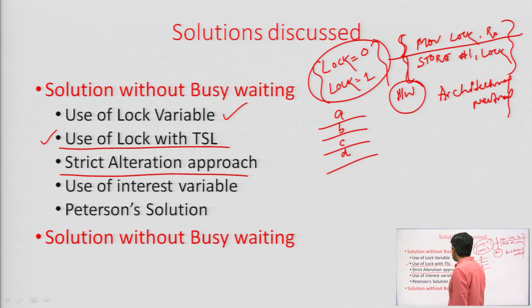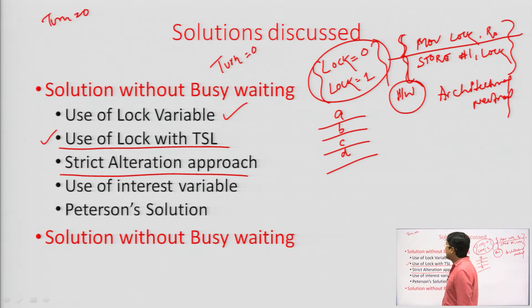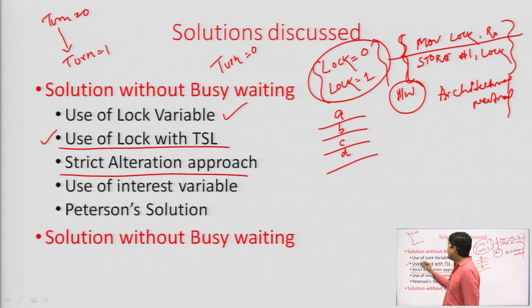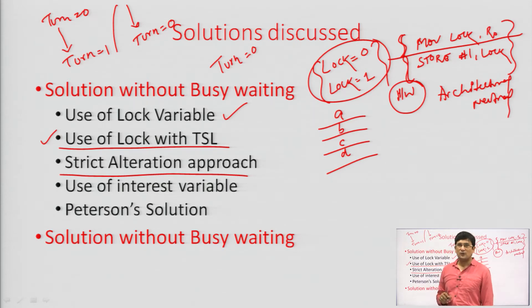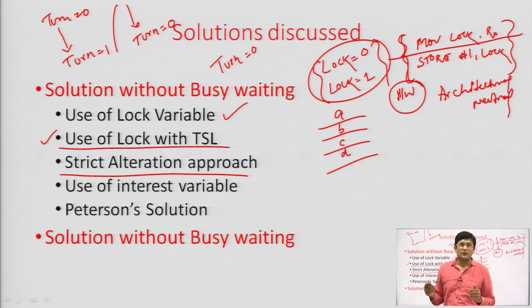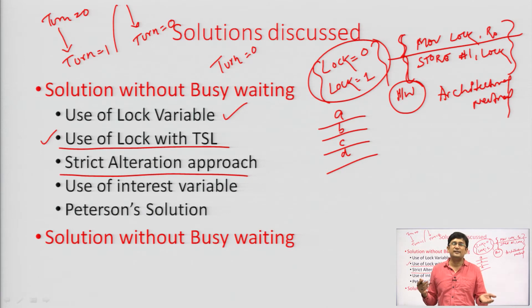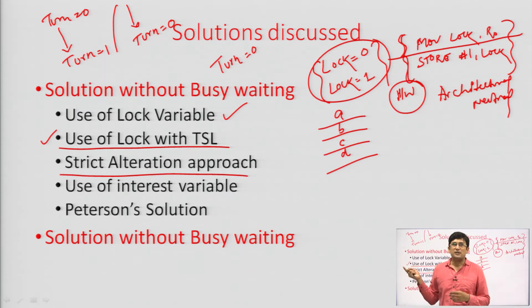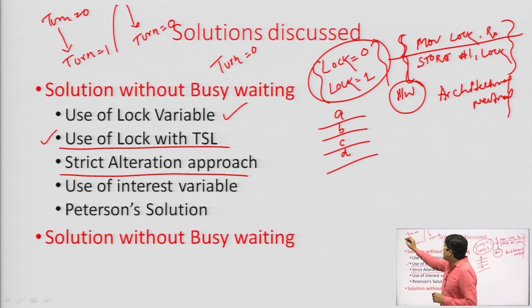In the strict alteration approach, process 0 executes, then process 1, then process 0 again, and so on — so bounded wait is satisfied. However, regarding progress: if process 0 exits and sets turn to 1, but process 1 is not interested, process 1 is neither executing the critical section nor allowing other processes to enter. So the progress property is not satisfied in this case.